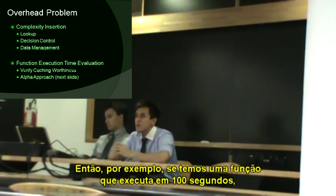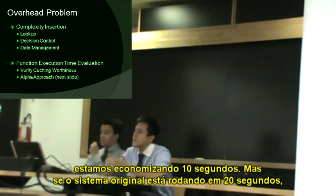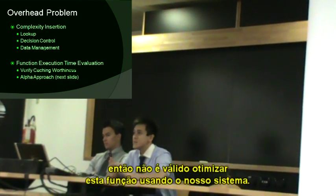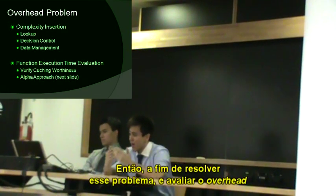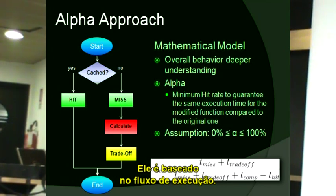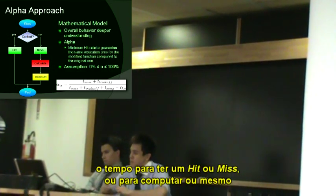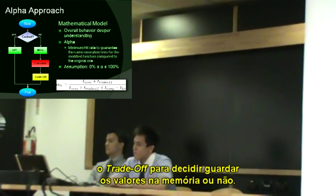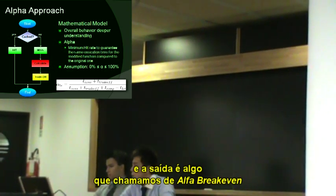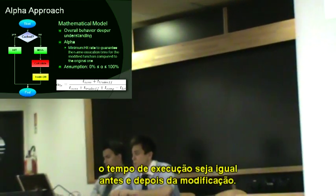So, for example, if we had a function that runs in a hundred seconds, and after the optimization it runs just in 90 seconds, we are saving actually 10 seconds. But if the system itself is taking 20 seconds overhead, it's not worth it to optimize this function using our system. So, in order to solve this problem and evaluate this overhead, we came up with a mathematical model. We call it the alpha approach. It's based on the execution flow. These blocks are consuming-time blocks — for example, the time to have a hit, or a disk access, or compute, or the time for the trade-off to decide whether to keep the values or not in the memory. The inputs of this model are these times, and the output is something we call alpha break-even. It's actually the minimum hit rate to guarantee the execution time to be equal before and after the optimization.